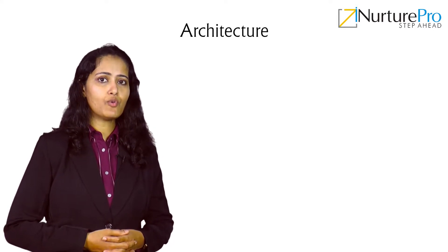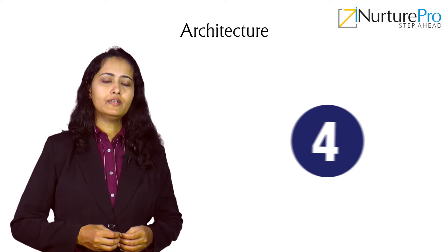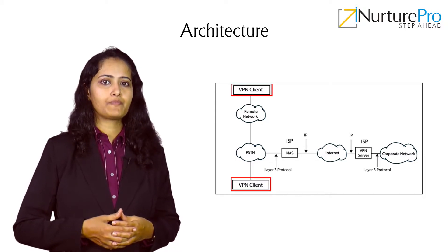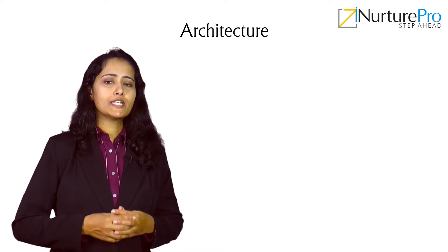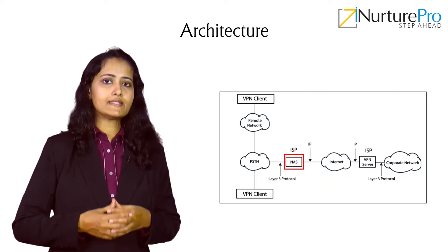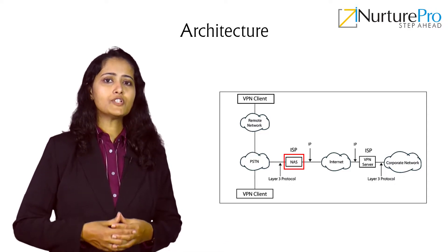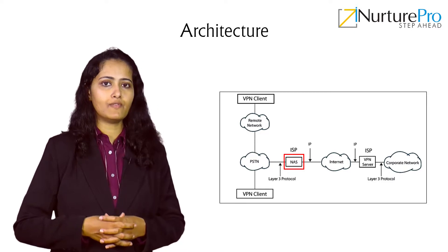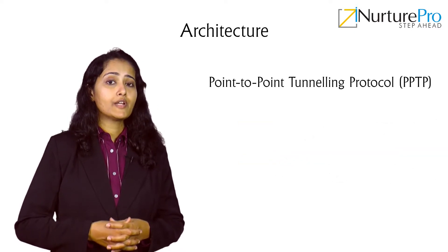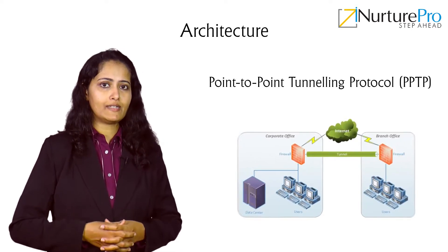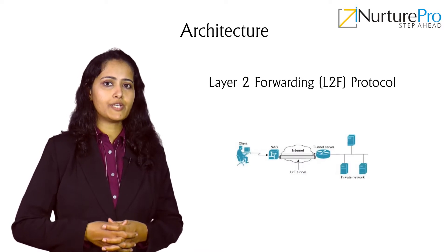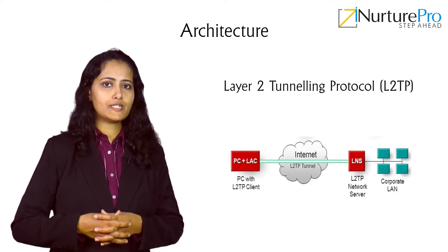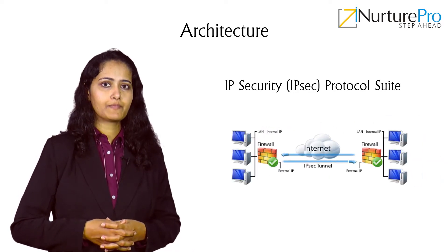The VPN architecture consists of four components. First, a VPN client — it initiates a PPP connection with the NAS via a public switch telephone network. Second, a network access server (NAS) — it is a device that ends dial-up calls over analog or digital circuits. After authenticating the user, the NAS directs the packet to the tunnel connecting to the VPN server. Fourth, VPN protocol — there are four tunneling protocols: Point-to-Point Tunneling Protocol, Layer-2 Forwarding Protocol, Layer-2 Tunneling Protocol, and IP Security (IPsec) Protocol.